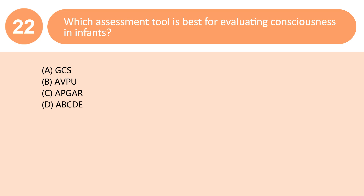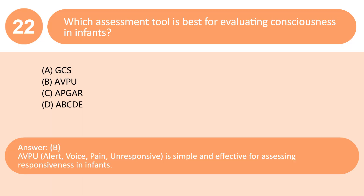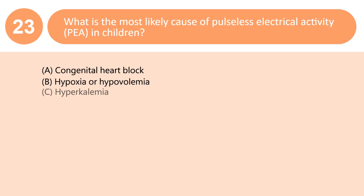Which assessment tool is best for evaluating consciousness in infants? A. GCS. B. AVPU. C. APGAR. D. ABCDE. Answer: B. AVPU — Alert, Voice, Pain, Unresponsive — is simple and effective for assessing responsiveness in infants.